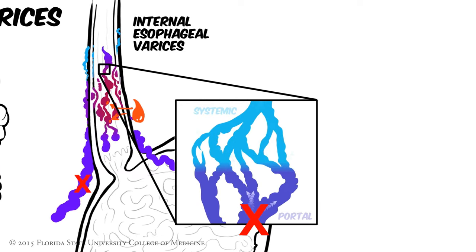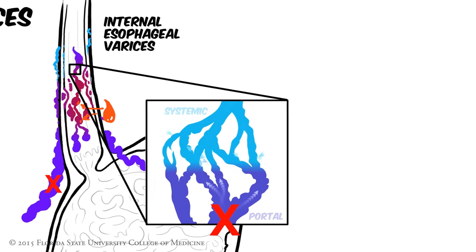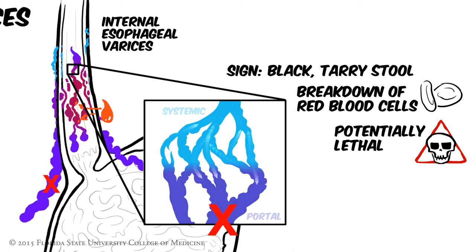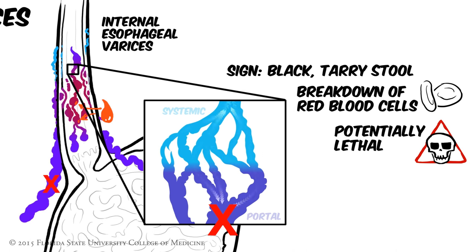In many cases, the first sign of bleeding esophageal varices is black and tarry stool caused by the breakdown of red blood cells in the GI tract. This is a potentially lethal condition often associated with massive acute hemorrhage and represents a medical emergency. Esophageal varices are the most dangerous result of pathological portosystemic anastomoses, but anastomoses also occur in other areas. Regardless of the region, the underlying process is the same: increased pressure in the portal system shunts portal blood to systemic veins, and the subsequent increase in volume passing through the systemic veins causes the formation of varices.